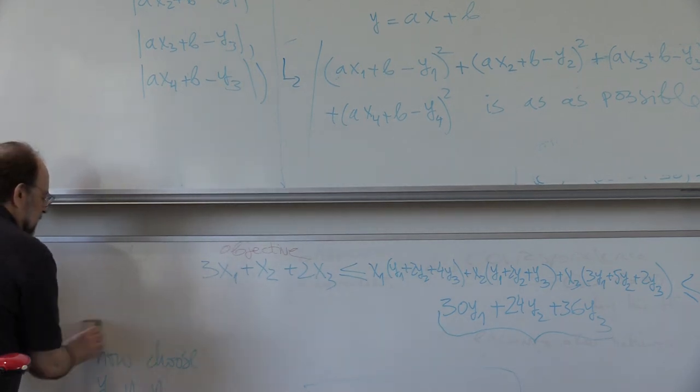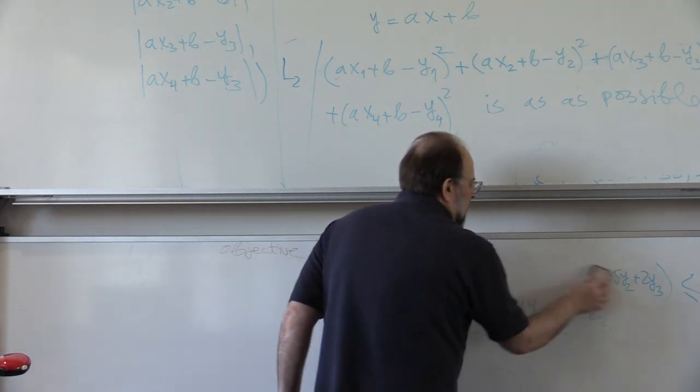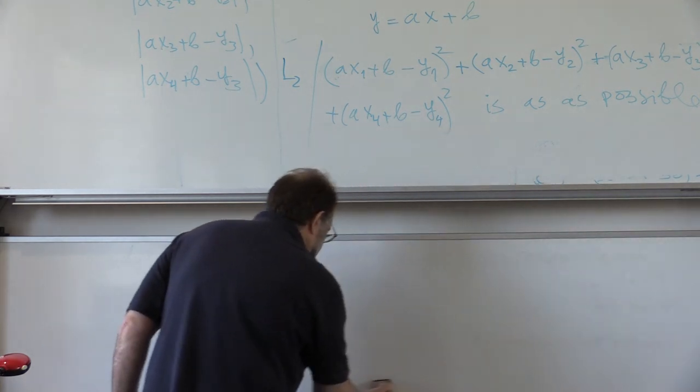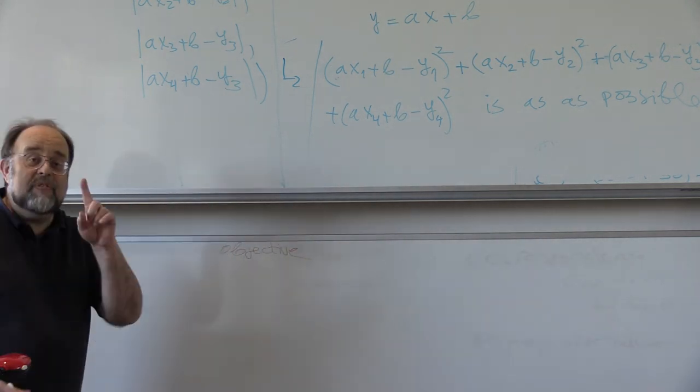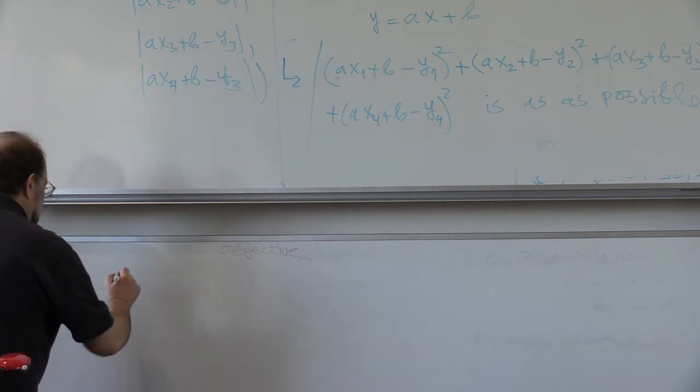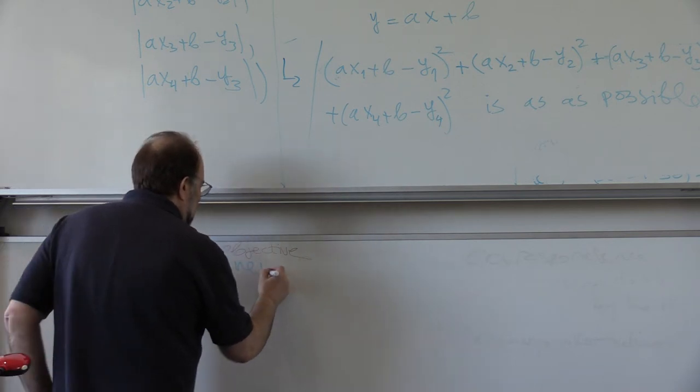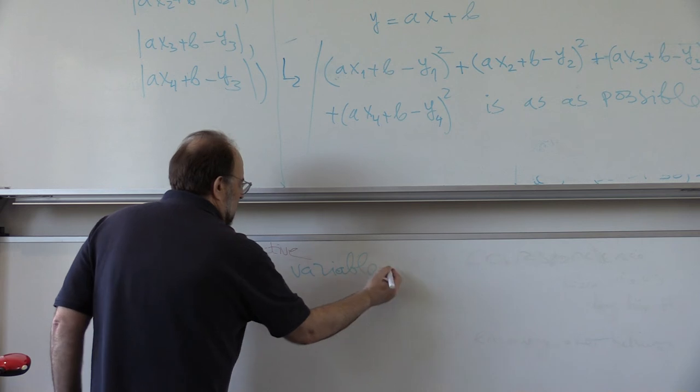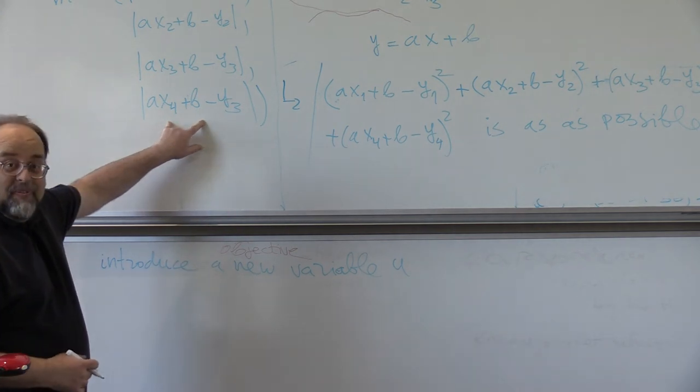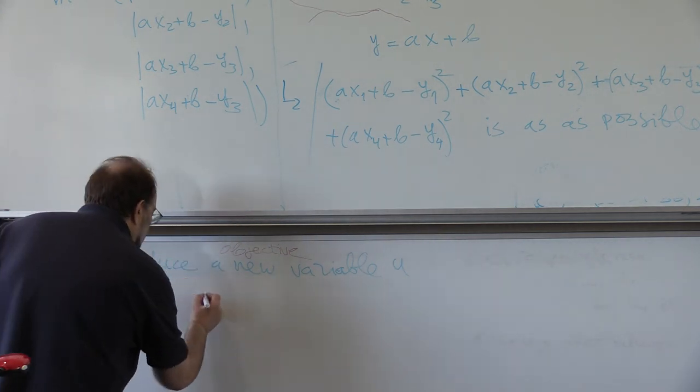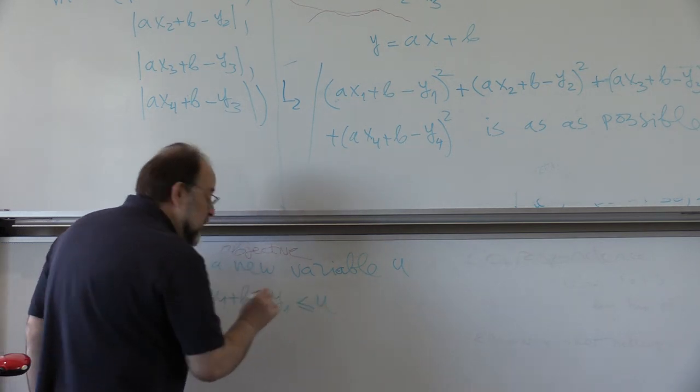And this is, in fact, the trick that we will be using in designing equiripple filters without using Remez exchange. You simply introduce a new variable u. So, introduce a new variable u and put the following. What will u be? U will be bound on the absolute values. So, you will put the following constraint. A x1 plus b minus y1. You want it smaller or equal than u. But, you also want, because you want, this is what we want. We want this. And u will, we will try to minimize u.